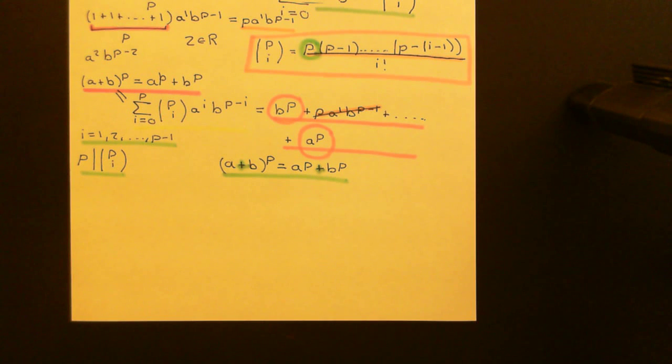Welcome back to this next video in which we are discussing the Frobenius endomorphism. The first thing I want to do in this second video is finish the proof that the Frobenius endomorphism is indeed a ring homomorphism, i.e. that it's a ring endomorphism.